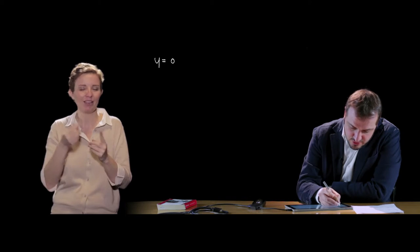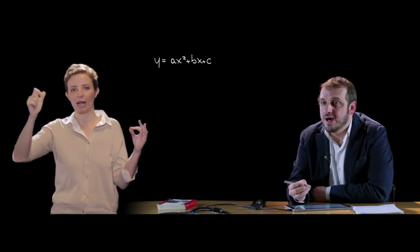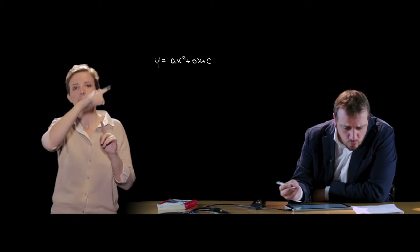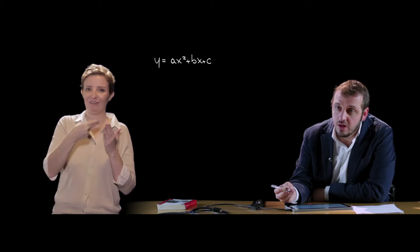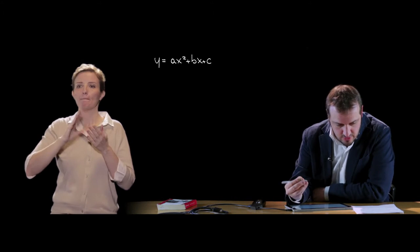È possibile comprendere meglio le soluzioni e il segno del trinomio di secondo grado ragionando per via grafica. Il ragionamento grafico richiede di associare il trinomio di secondo grado alla funzione Y = AX² + BX + C, cioè la funzione quadratica, la cui rappresentazione nel piano cartesiano — tema che approfondiremo più avanti — è quella di una parabola. Vogliamo vedere quali valori dell'ordinata dei punti della parabola risultano essere maggiori di 0 oppure minori di 0, quindi positivi o negativi.